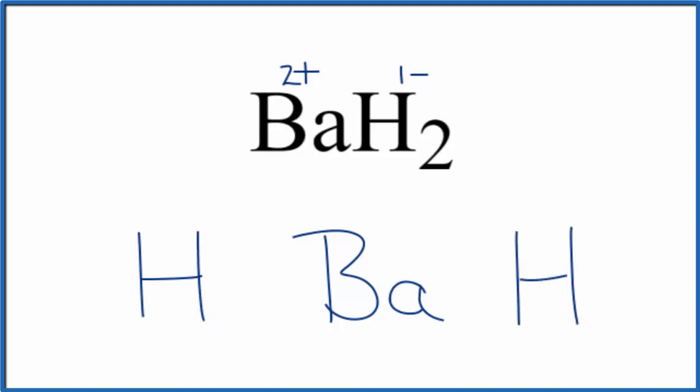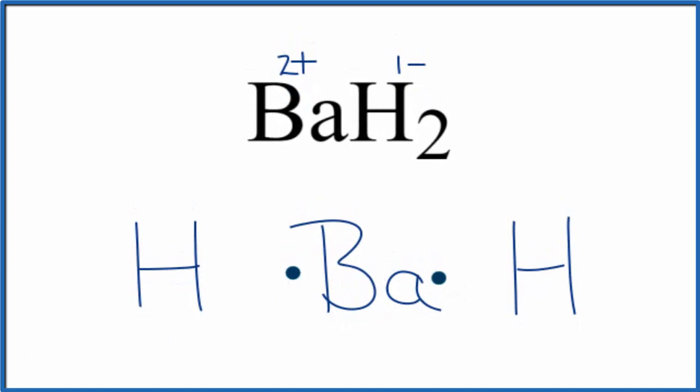Barium is in group two on the periodic table. It has two valence electrons, so we're going to put one on either side of the barium. Hydrogen is in group one, so it has one valence electron. Each hydrogen has one valence electron.